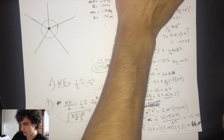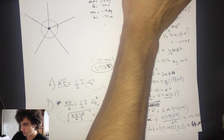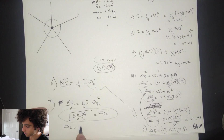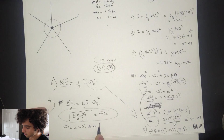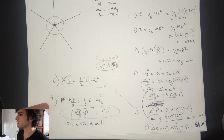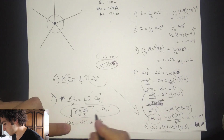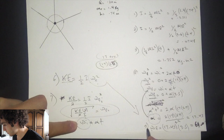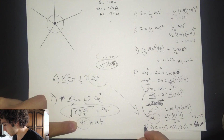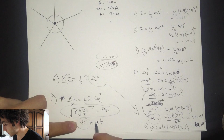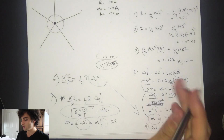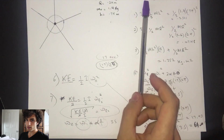They also ask for the magnitude of the angular acceleration while the fan slows down. We use: omega final equals omega initial plus alpha times t. In this case, the final omega is the new lower speed from number seven, the initial omega is the full speed from number five, alpha is what we're solving for, and t is 3.5 seconds. Solve for alpha. Hope that helps — see you guys in the next video!